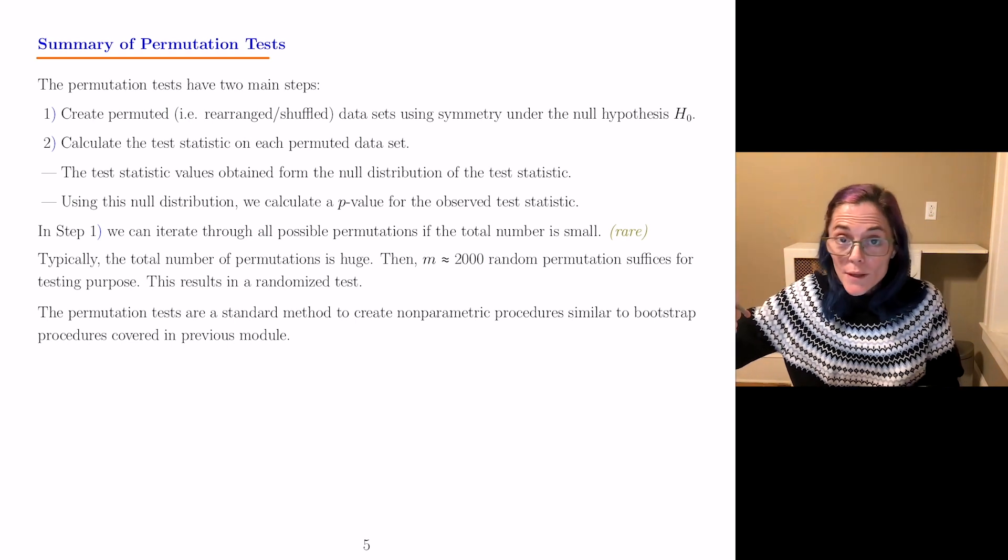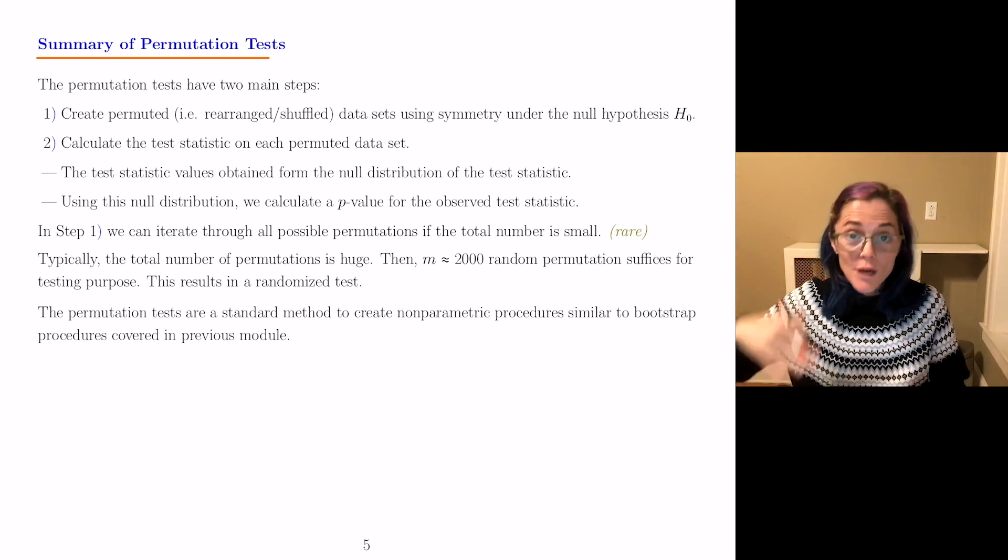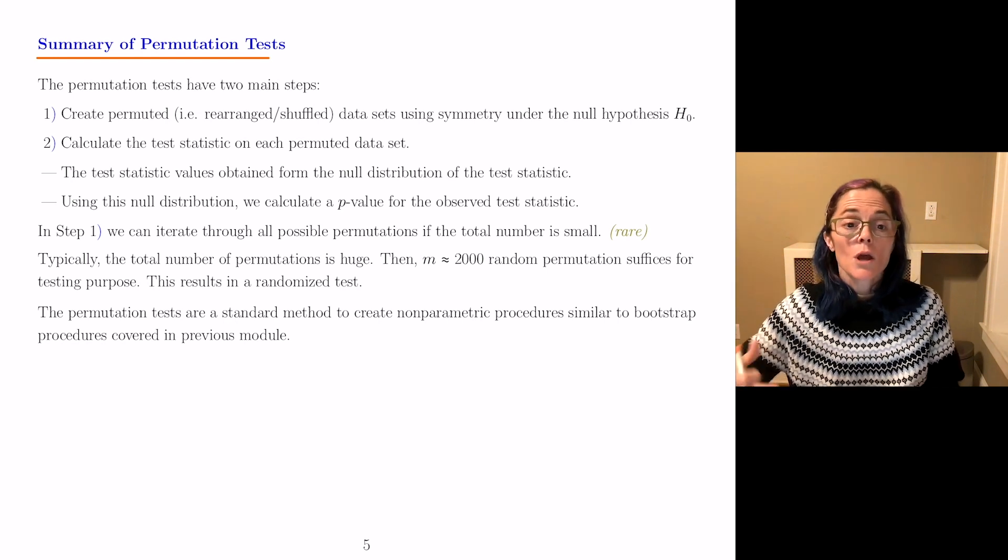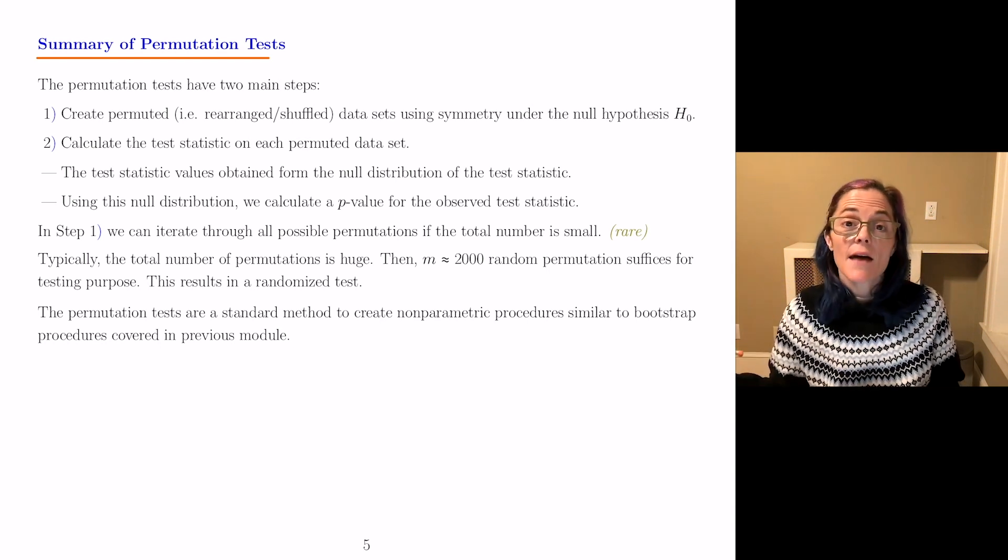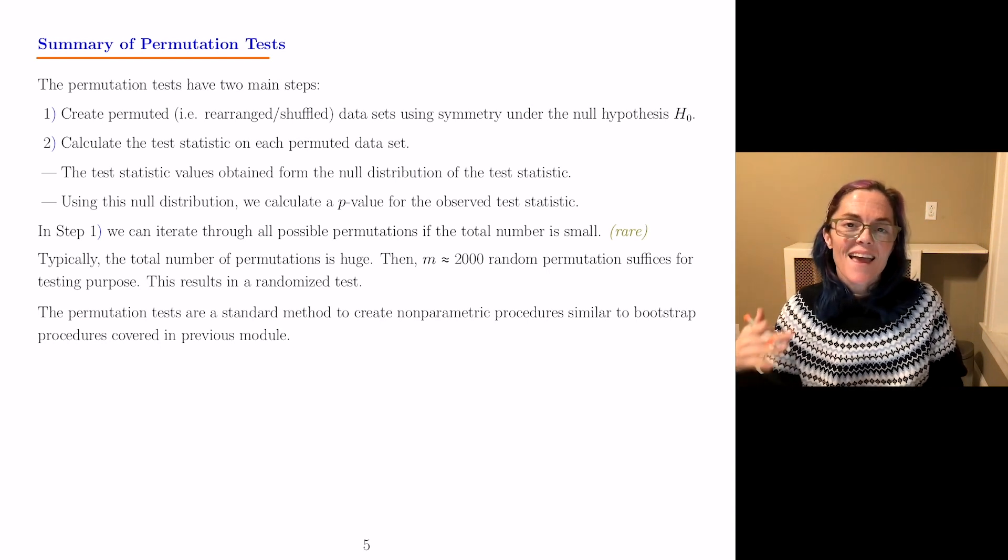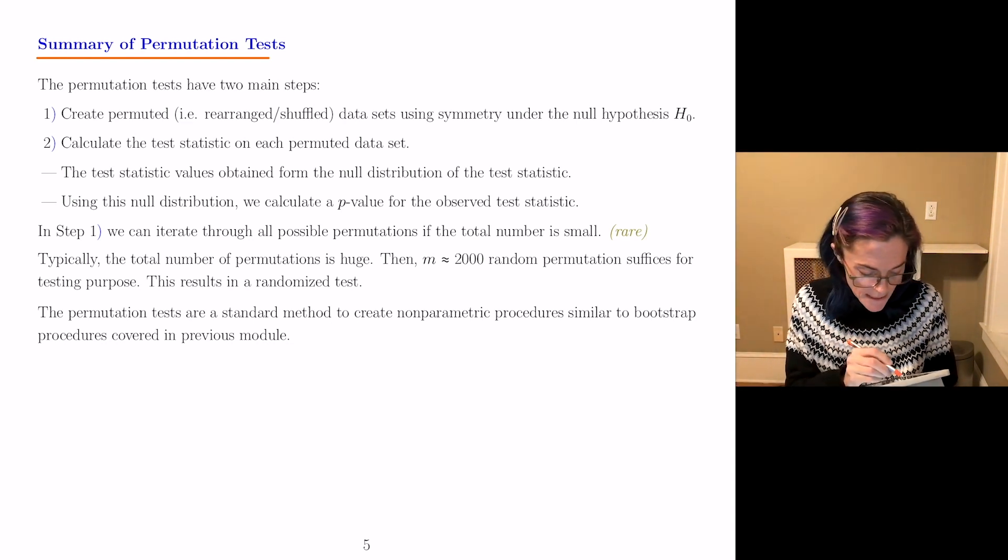Then, for each permuted or shuffled or rearranged, however you want to say it, for each permuted data set, you calculate the test statistic. So, all of these together create a null distribution for your test statistic. That is what this is saying.